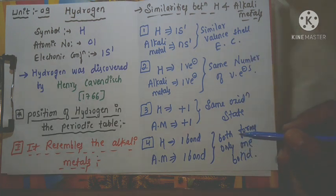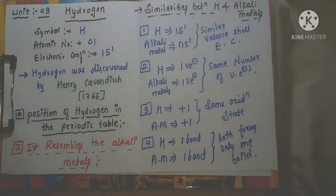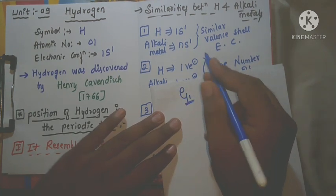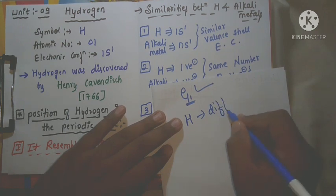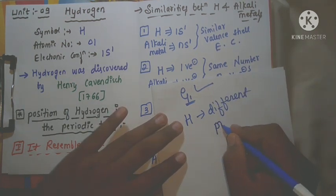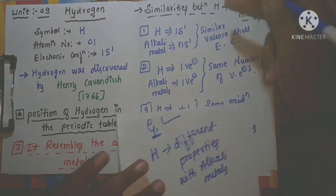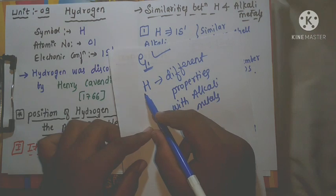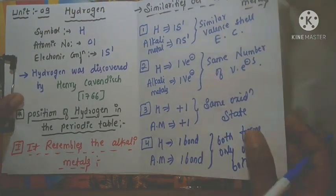After studying these four similarities, one might think hydrogen can be kept in the first group. But at the same time, hydrogen shows different properties from the alkali metals. We will now discuss the differences between hydrogen and the alkali metals.